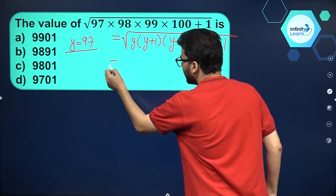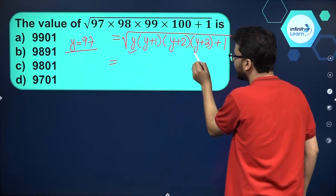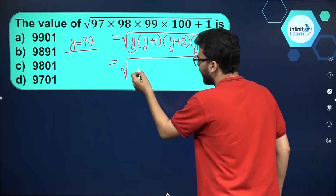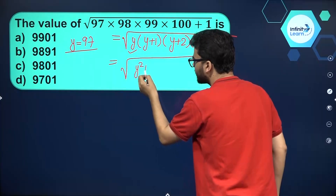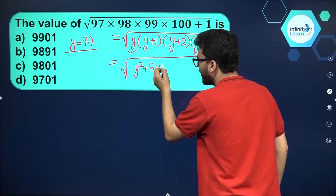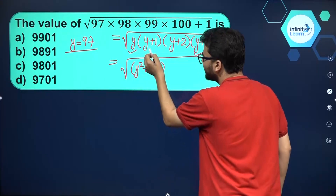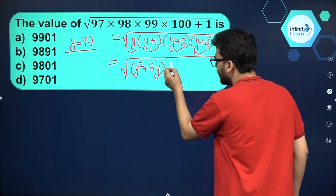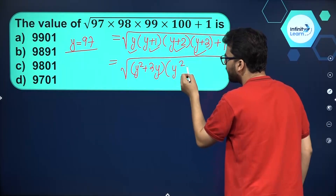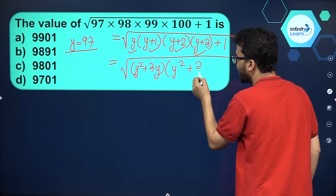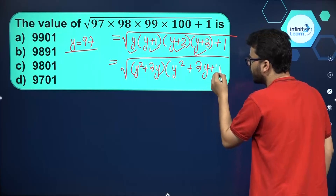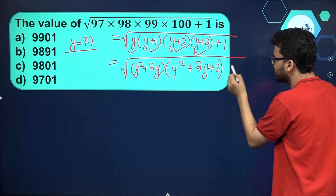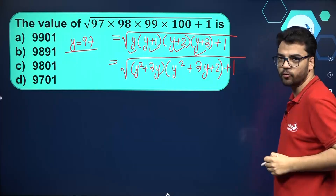Now if I take the first term and the last term and multiply them, I get y² + 3y. And if I multiply the second and the third terms, I get y² + 3y + 2. Plus 1 is there inside the square root as well.